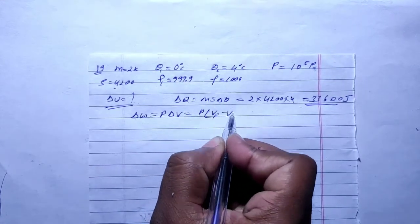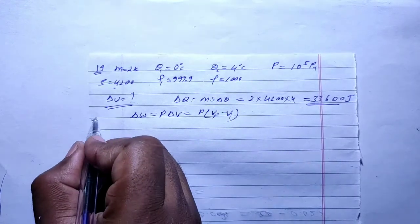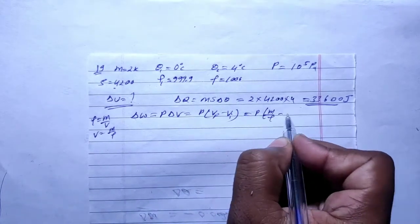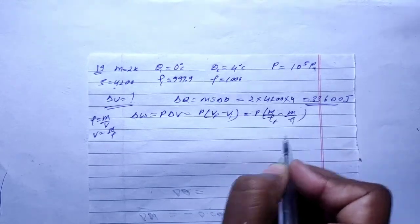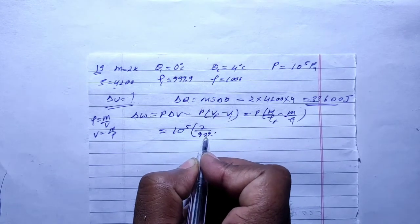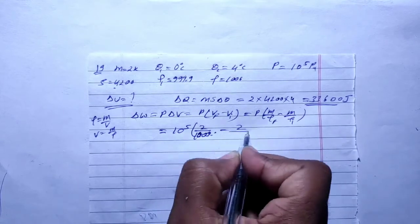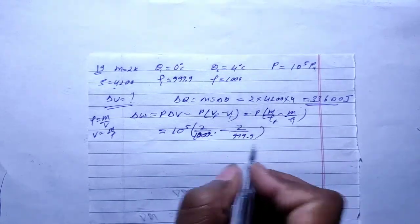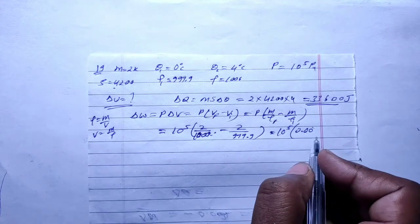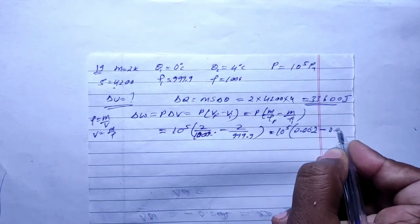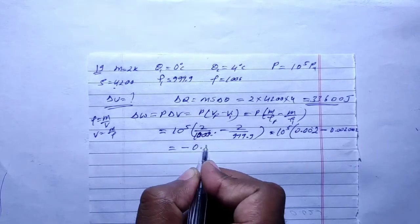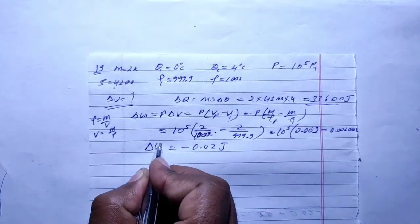Next, calculate work done. Work done W = P × ΔV = P × (V_final - V_initial). Volume = mass/density, so V = m/ρ. Putting values: W = 10⁵ × (2/1000 - 2/999.9) = 10⁵ × (0.002 - 0.0020002) ≈ -0.02 Joule. So work done is approximately -0.02 Joule, which is negative.